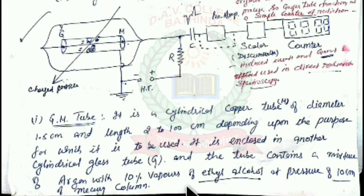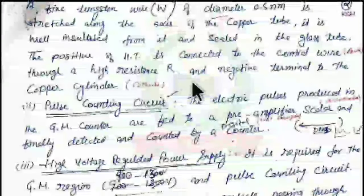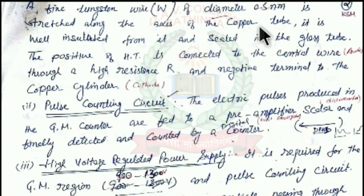The tube contains a mixture of polyatomic gases such as argon and 10% ethyl alcohol at a pressure of 10 cm of mercury. A fine tungsten wire of diameter 0.5 mm is stretched along the axis of the copper tube, well insulated and sealed in the glass tube. A positive high-tension voltage is connected to the central wire (anode) through resistance R, and the negative terminal is connected to the copper cylinder, which is the cathode.